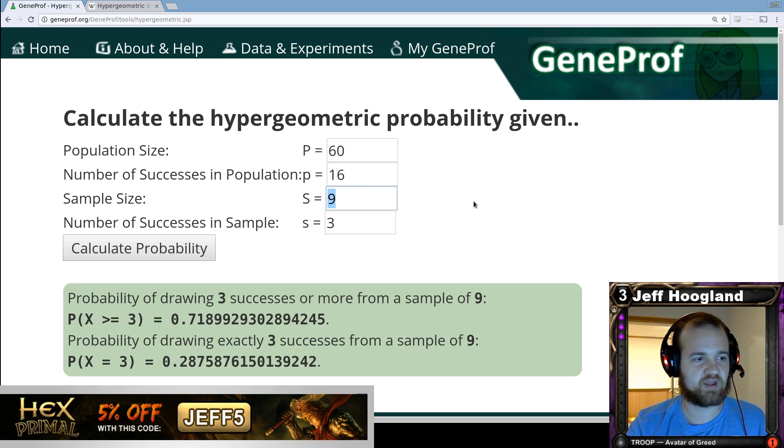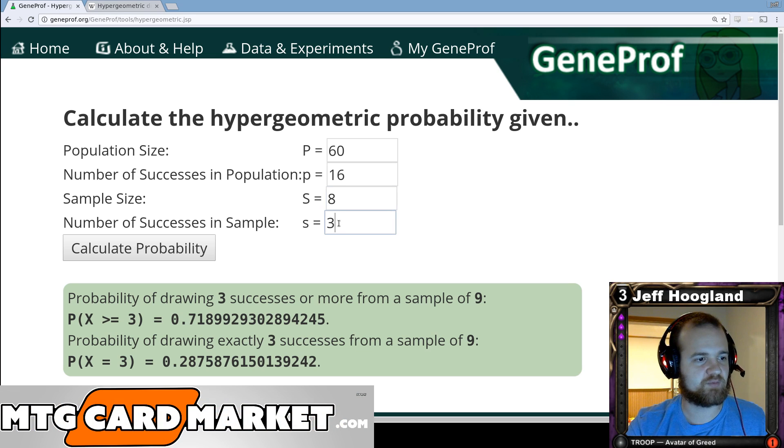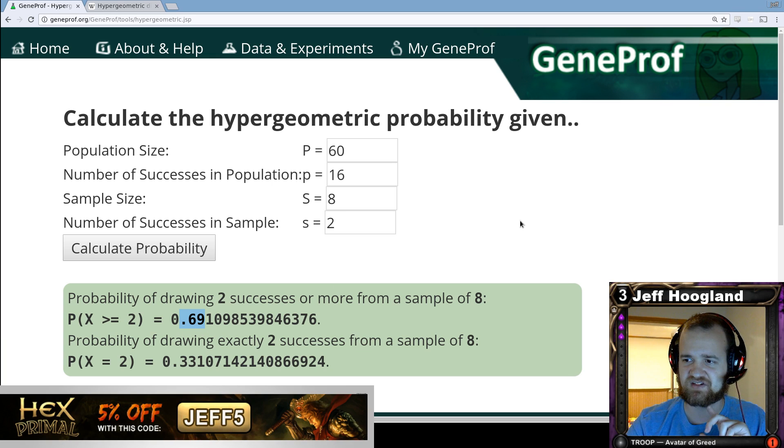Well, assuming we're on the play, we've seen our seven cards in our opening hand plus one more. So there's going to be eight cards in our sample. And then we want at least two of our 16, so we need two black sources to play that Grasp of Darkness. So we hit calculate probability. And with just 16 black sources, we're only going to be able to play that Grasp of Darkness on turn two on the play about a little bit less than 70% of the time.